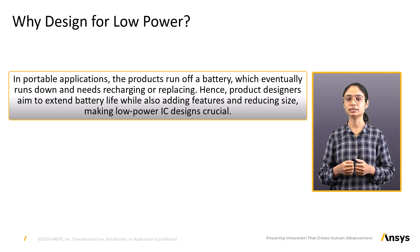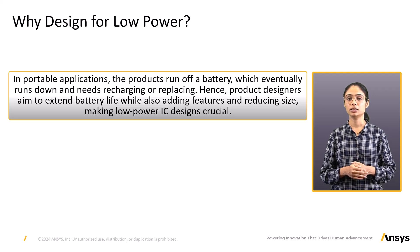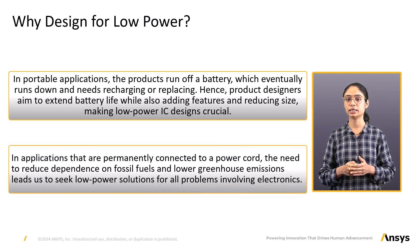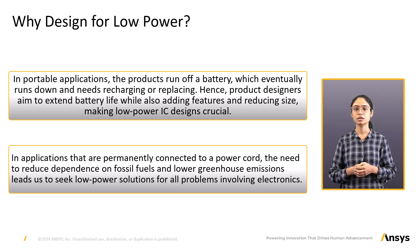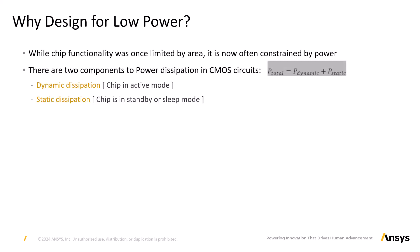Why design for low power? In portable applications, products run off a battery which eventually runs down and needs recharging or replacing. Hence product designers aim to extend battery life while also adding features and reducing size, making low-power IC designs crucial. In applications permanently connected to a cord, the need to reduce dependence on fossil fuels and lower greenhouse emissions leads us to seek low-power solutions for all electronics problems. High-performance chips are limited to about 150 watts before liquid cooling or other costly heat sinks become necessary. While chip functionality was once limited by area, it is now often constrained by power. There are two components to power dissipation in CMOS circuits: dynamic and static. Dynamic dissipation occurs when the chip is in active mode; static dissipation occurs when the chip is in standby or sleep mode. Power and performance architects aim to hit the lowest power consumption possible without any performance bottlenecks.